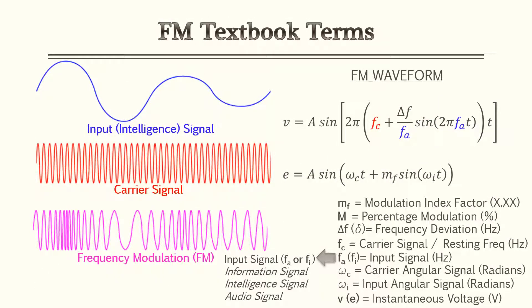Now let's start going over textbook terms and equations. For this slide I provide two equations — they're both frequency modulation waveforms, just given in two different ways. One's in radians, one's in hertz. Typically we'll deal with hertz; however, some textbooks may give it one way and your PE reference material may give it another way, so be aware these are both the same thing in two different forms.